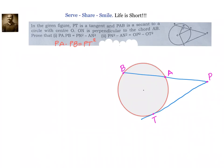Hello friends, welcome back. We have been given a circle with a tangent and a secant. The tangent PT is drawn from an external point P, and the secant is PAB. We have to prove that PA into PB equals PT square.